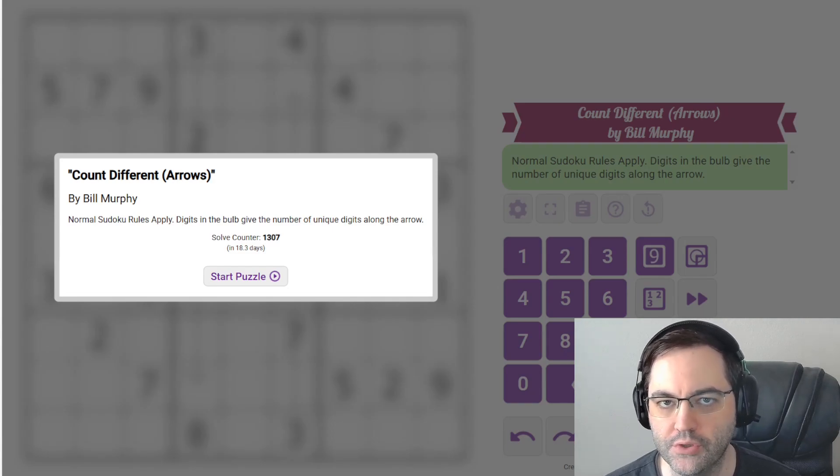Hi everyone, this is the Gas Walkthrough for June 29th. I'm Philip Newman. Today I'm solving Count Different Arrows by Bill Murphy.